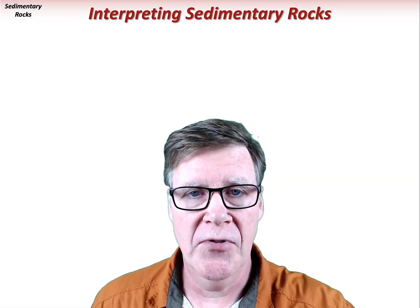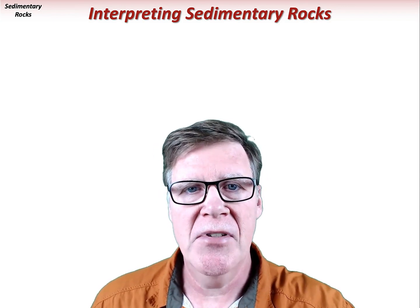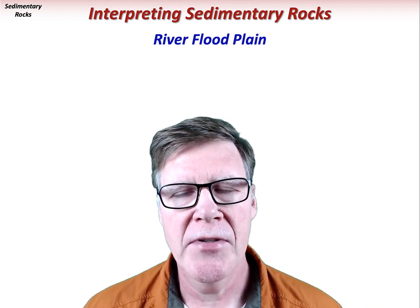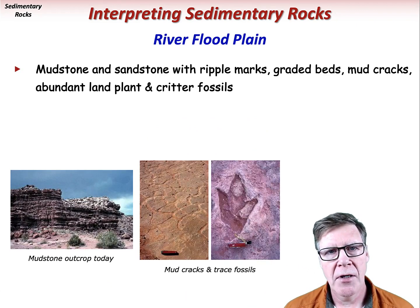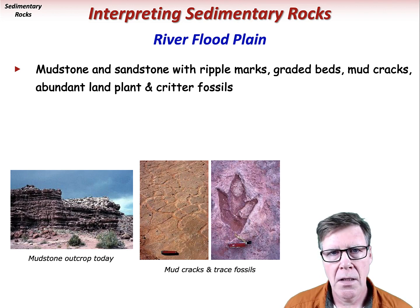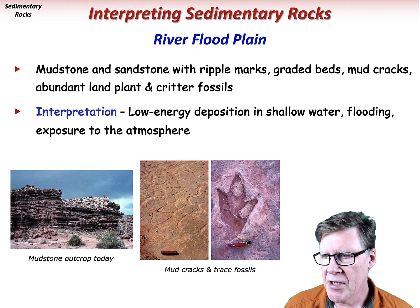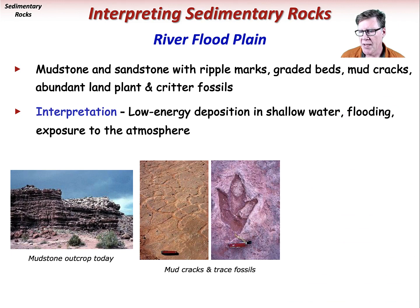Now for a few real-world examples of how we interpret sedimentary rocks in order to describe the depositional environments of the geologic past. River floodplain environments are commonly represented by mudstone and sandstone. Floodplain rocks include ripple marks, graded beds, mud cracks, abundant land plant and critter fossils, etc. The interpretation of these rocks and sedimentary structures is low-energy deposition in shallow water, flooding, and then exposure to the atmosphere.